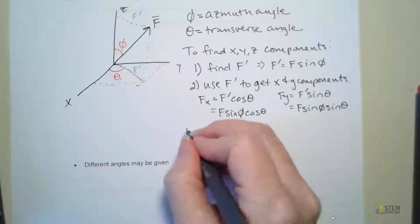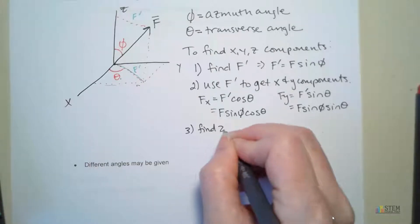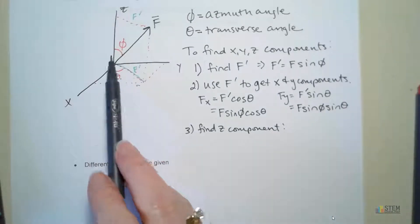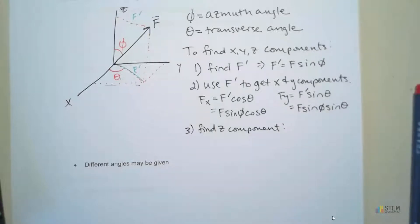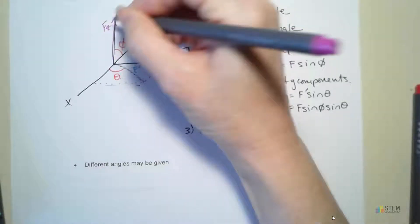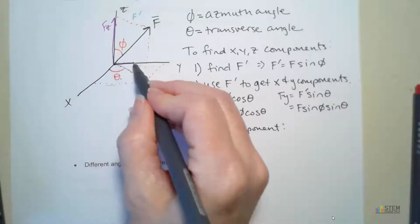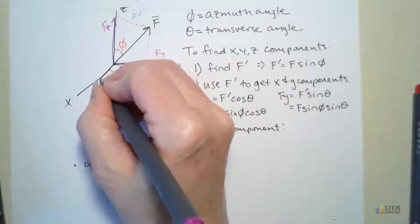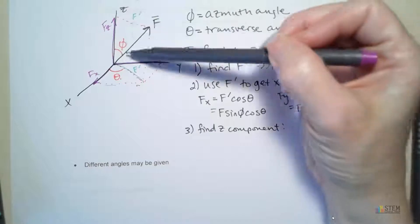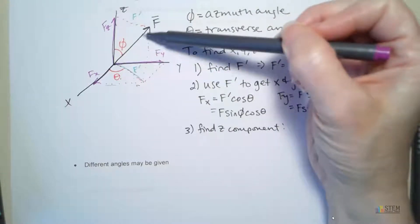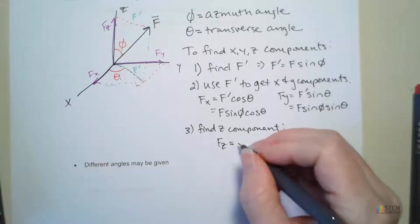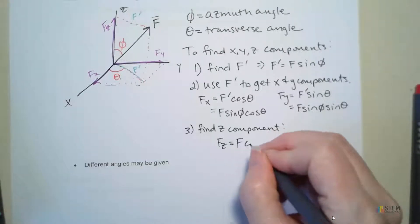Finally, we've got to get the Z component, and the Z component is kind of on its own — you don't need F prime for this one. The Z component would be right here. That's Fz. If you look, we've got this angle phi and then we've got this force. Since Fz is adjacent to that angle, it would just be F cosine phi.